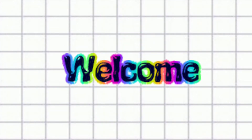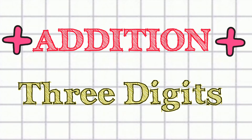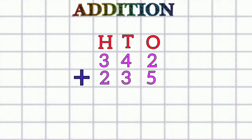Hi everyone, welcome back! Today we are going to learn the addition of three-digit numbers. Previously we learned that addition always starts from the ones place — the same rule follows here and in all other addition questions. First we start with the ones place, then the tens place, and finally the hundreds place.